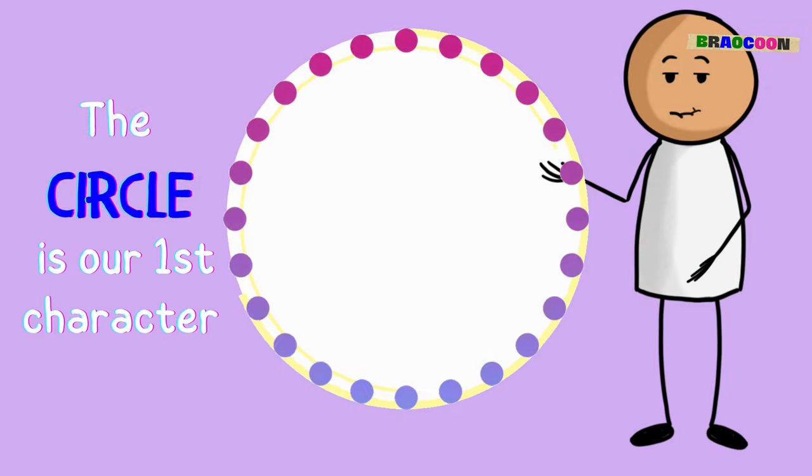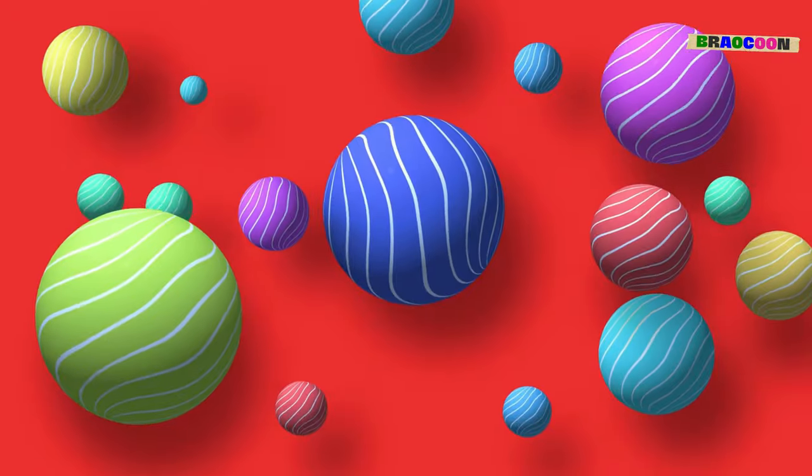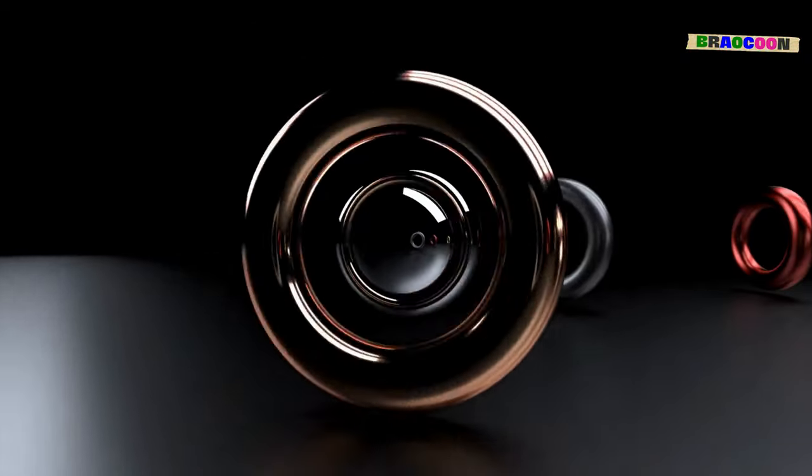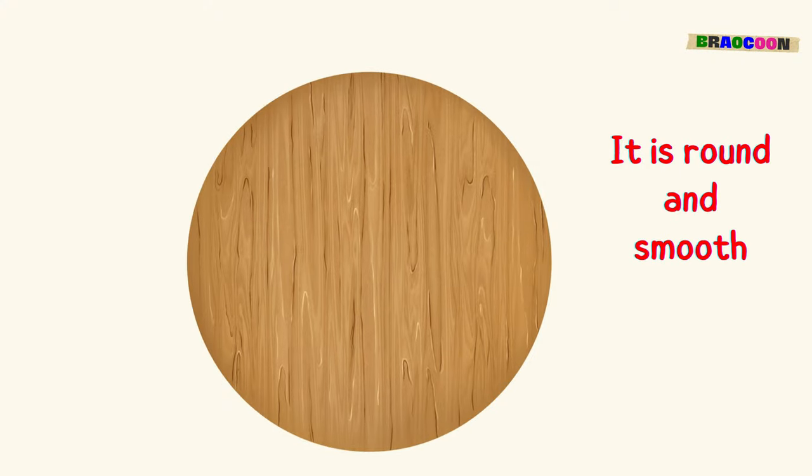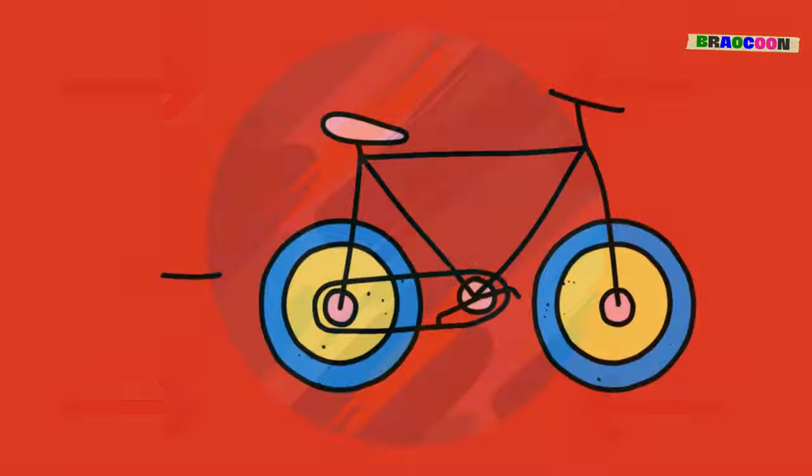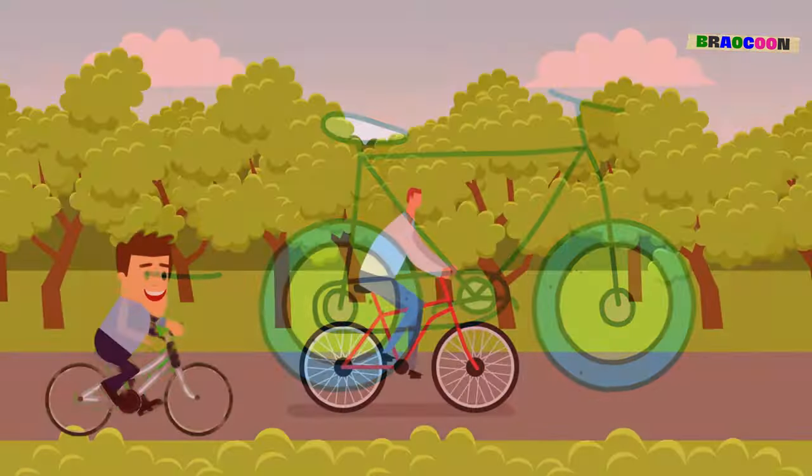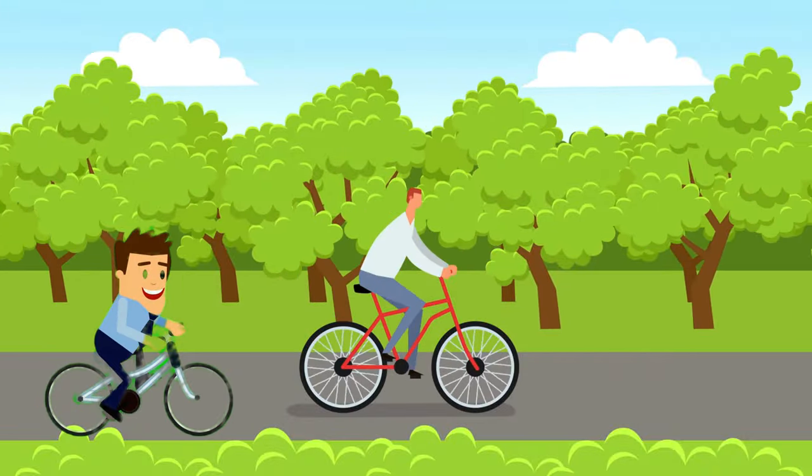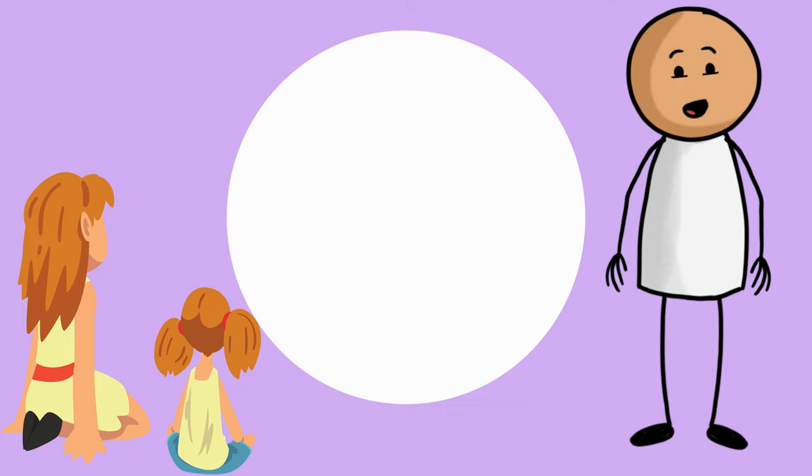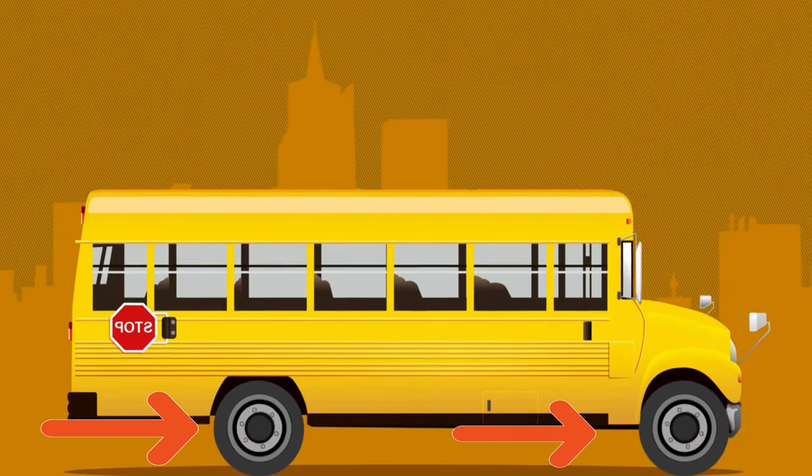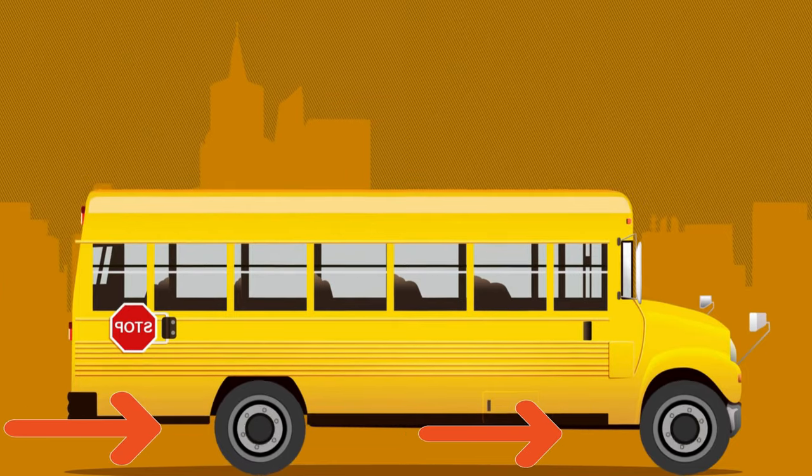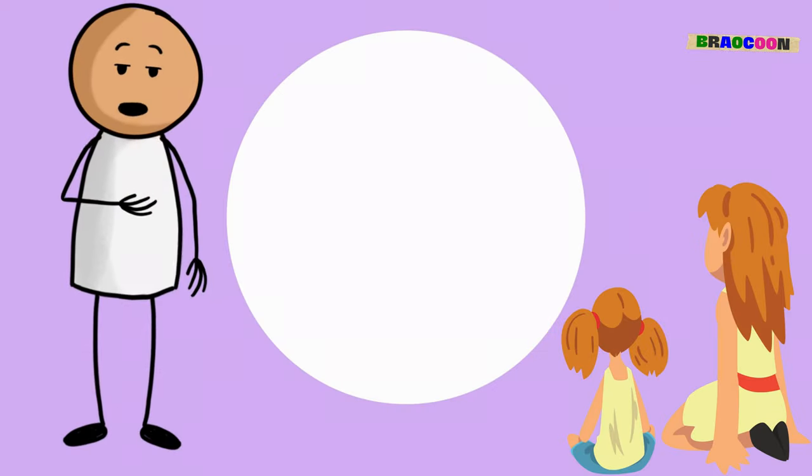The circle is our first character. A circle is also known as the shape without corners. It is round and smooth, with no corners or edges. It is like the wheels on a bike, rolling smoothly along. Can you name anything nearby that's shaped like a circle? The tires of our school bus have a round shape like a circle. That's correct, my friend.